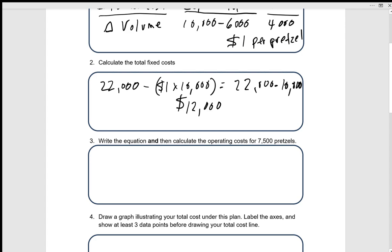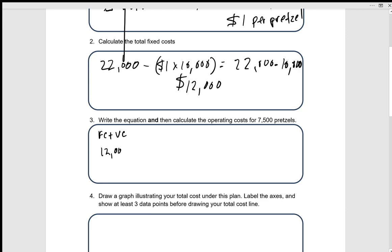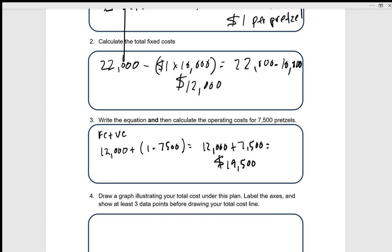Now we want an equation and to calculate operating costs for seventy-five hundred pretzels. Operating costs equal fixed costs plus variable costs. Fixed costs are twelve thousand, variable cost is one dollar per pretzel. So: twelve thousand plus one dollar times seven thousand five hundred equals twelve thousand plus seventy-five hundred, meaning our operating costs would be nineteen thousand five hundred dollars.